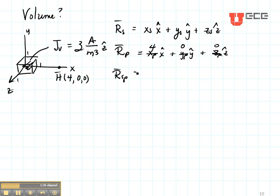Then RSP is RP minus RS, which is going to give me 4 minus XS in the X direction, minus YS in the Y direction, minus ZS in the Z direction.